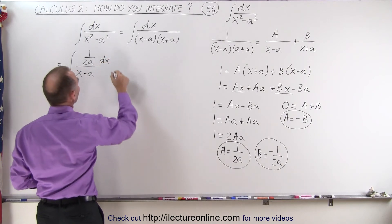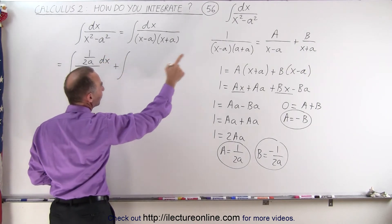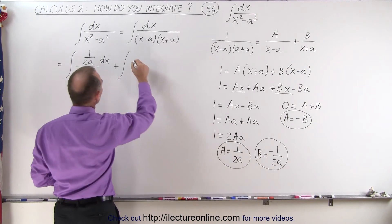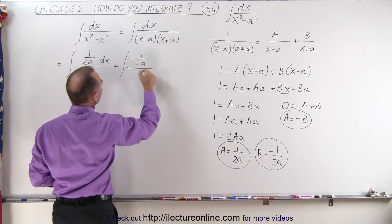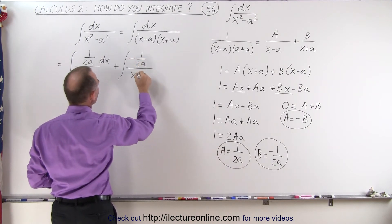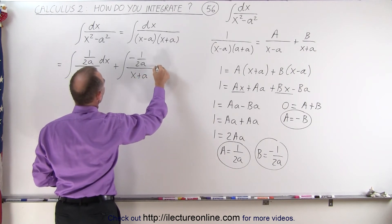And of course, we need the dx still. And then plus the second integral of B, which is minus 1 over 2a, divided by x plus a, times dx.